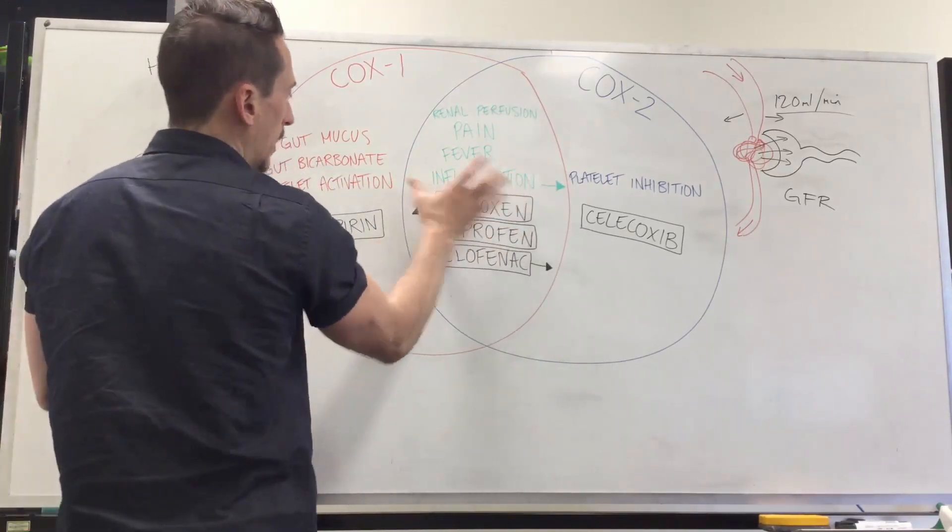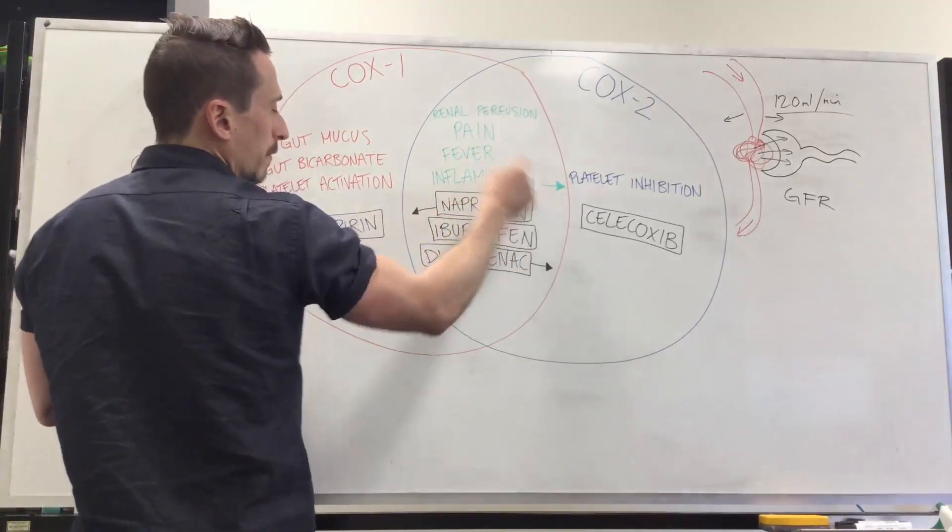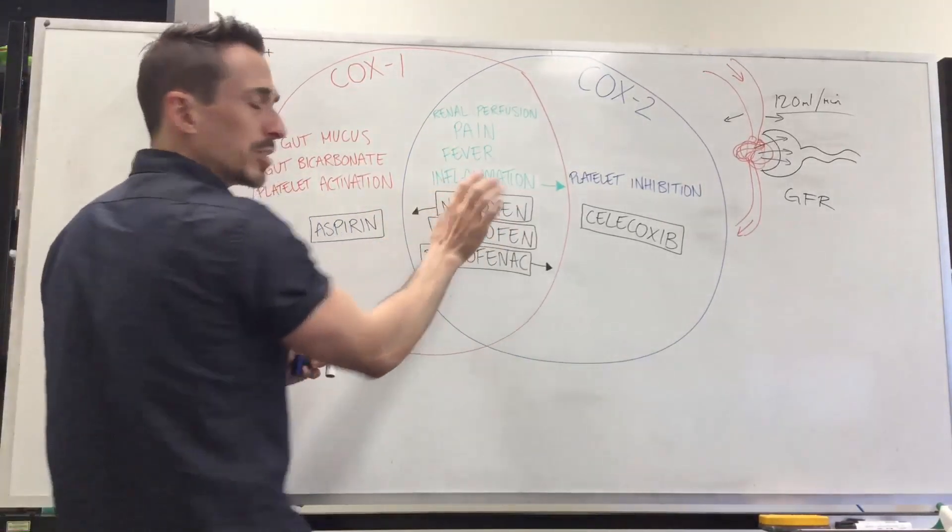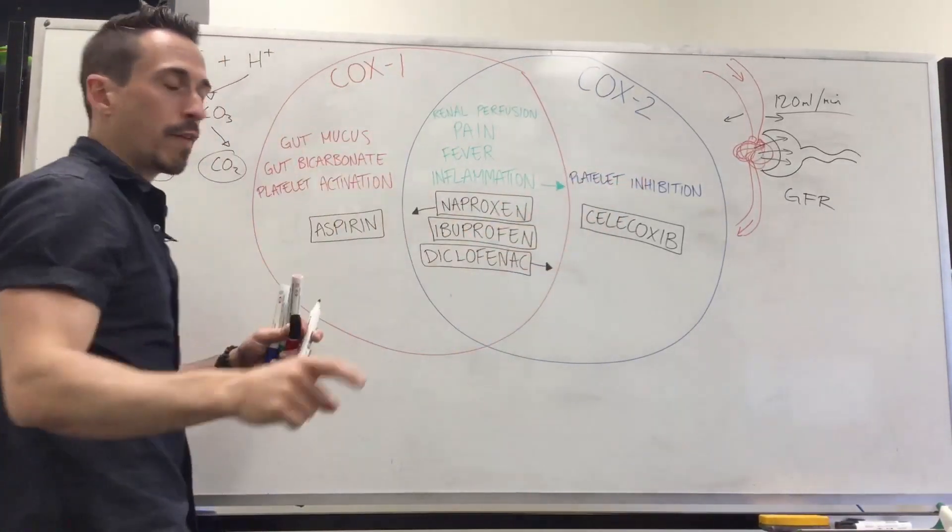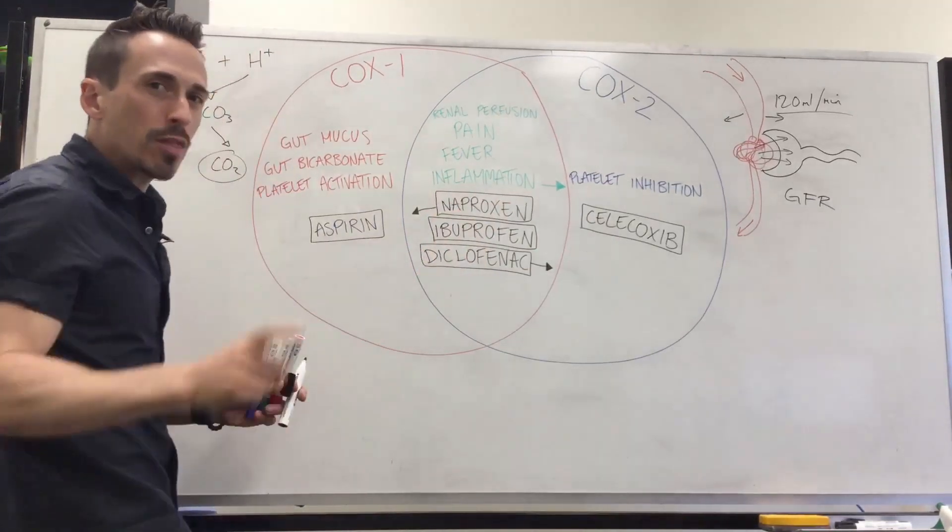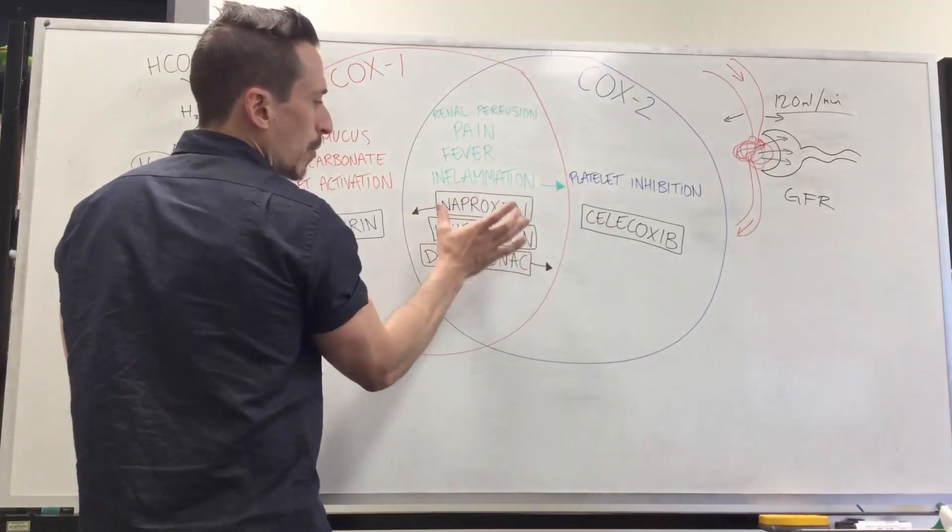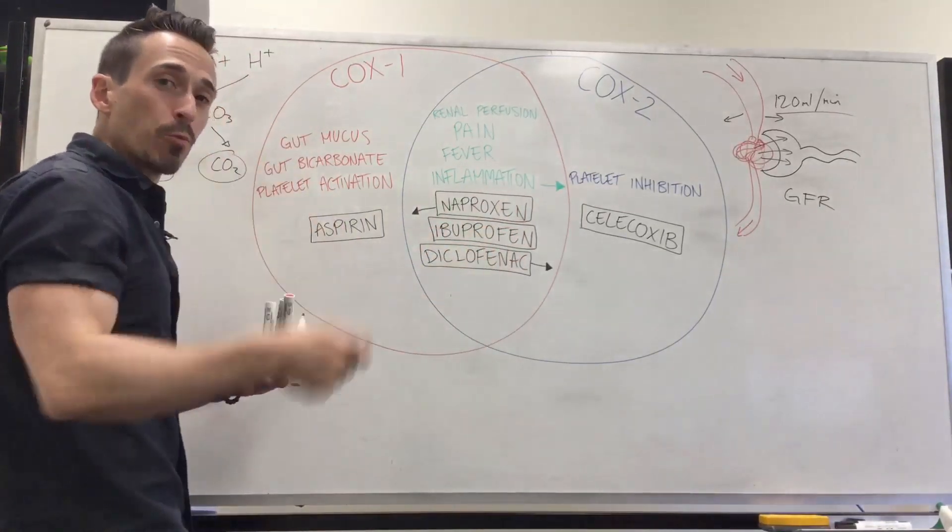Now, have a look. I've got inflammation here. Now, while aspirin is going to affect pain, fever, and inflammation, inflammation sits moreover with a COX-2 enzyme function, which means aspirin is good at pain and fever, not that great at inflammation.